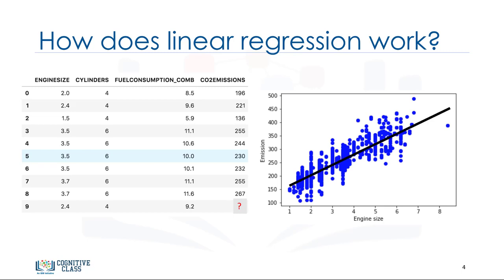With linear regression, you can fit a line through the data. For instance, as the engine size increases, so do the emissions. With linear regression, you can model the relationship of these variables. A good model can be used to predict what the approximate emission of each car is. How do we use this line for prediction now?